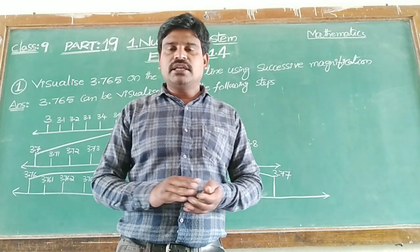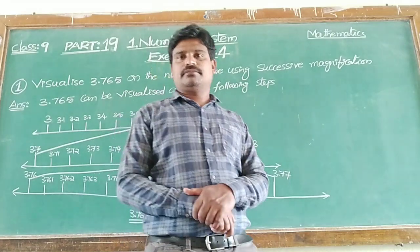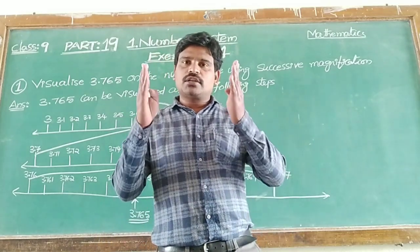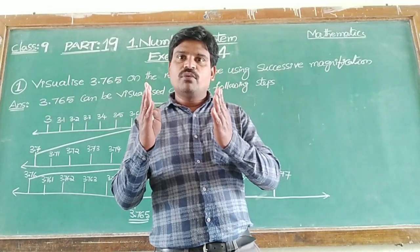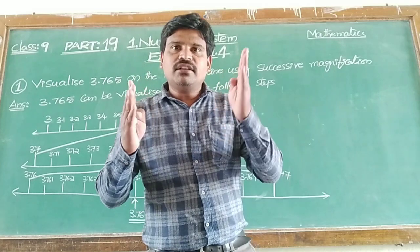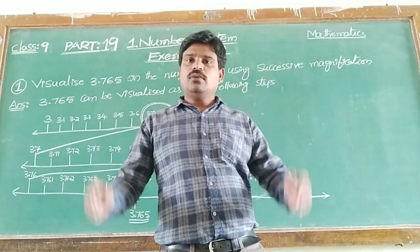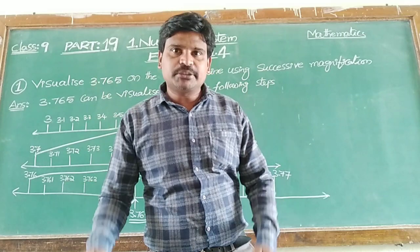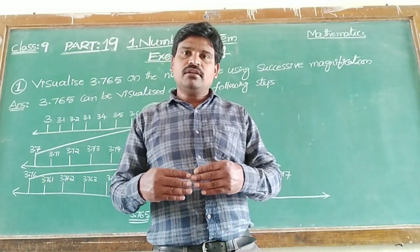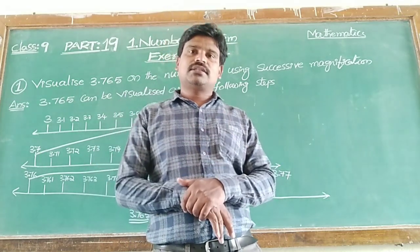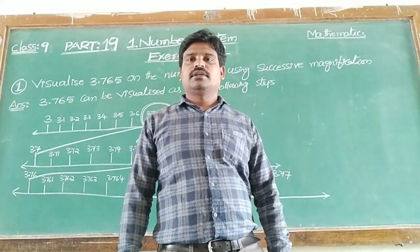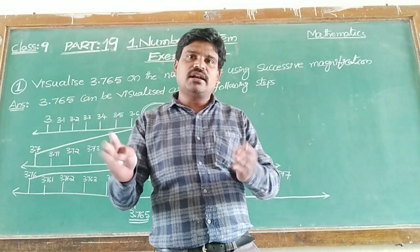Suppose there is a number 3.5. How can you locate 3.5 on the number line? First, we identify where it lies. The number 3.5 lies between 3 and 4. So we consider the whole numbers first. In between those whole numbers, we have the given real number. For example, 3.5 lies between the whole numbers 3 and 4.